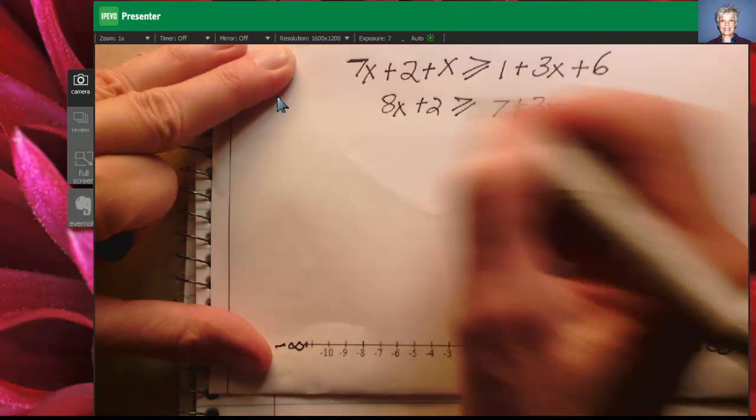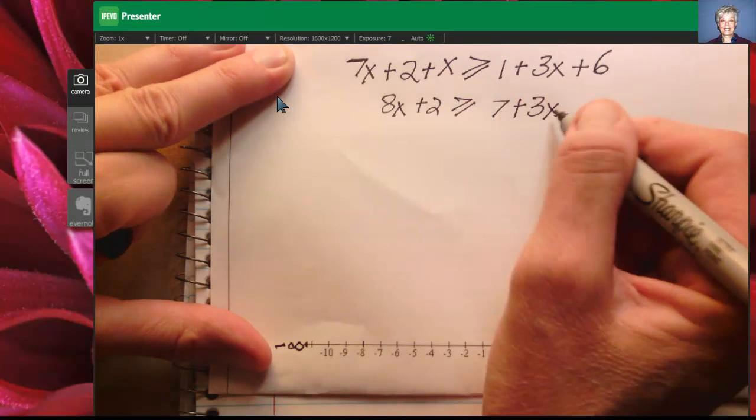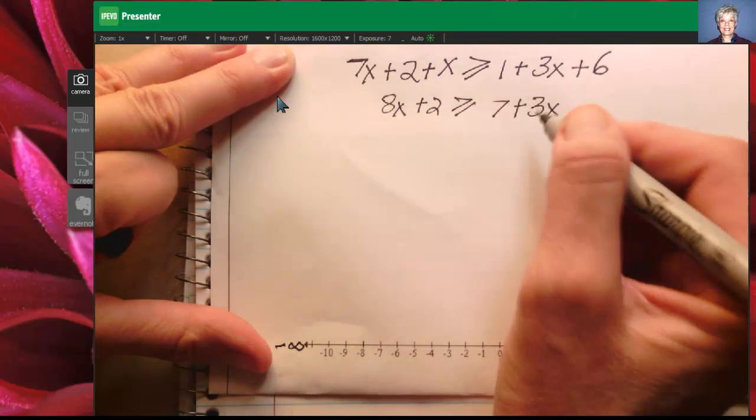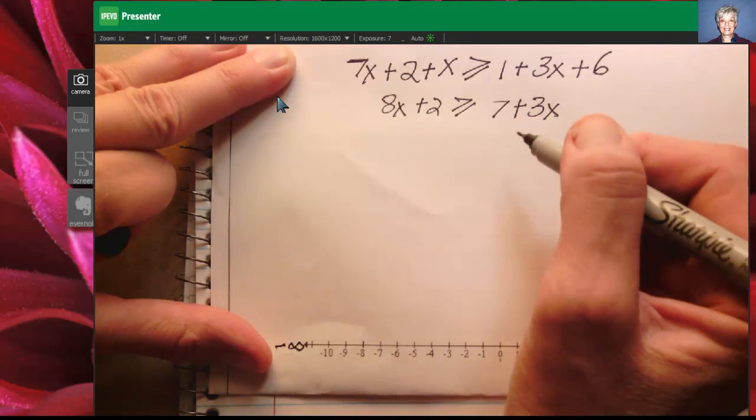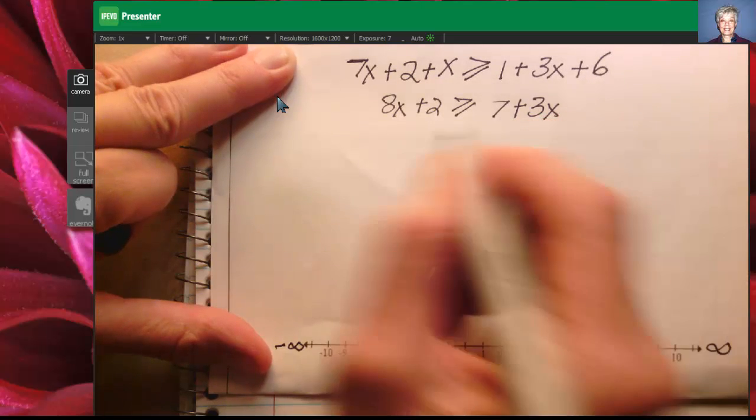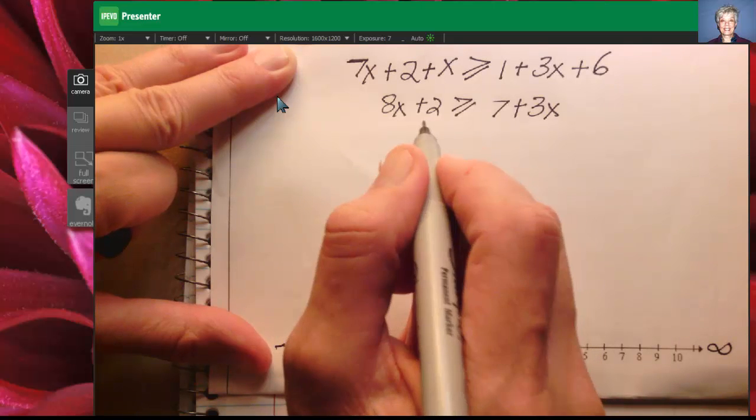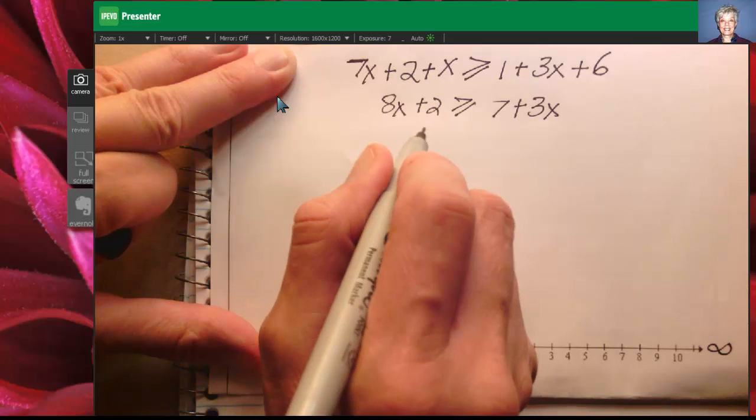Now I have one variable term and one constant term on the left, one constant term, one variable term on the right. I'm now ready to start trading sides. When you're dealing with an inequality you always want to make sure that your variable terms end up on the left. Whether it makes them negative or positive doesn't matter. You need your variable term on the left so that graphing will be easy.